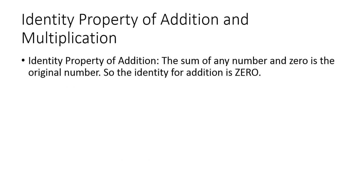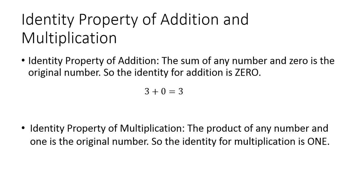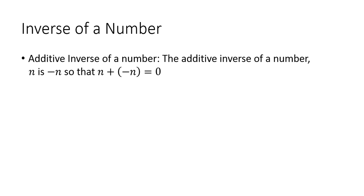Next we have the identity properties of addition and multiplication. The identity property of addition says the sum of any number and zero is the original number — the identity for addition is zero. So three plus zero equals three, five plus zero equals five, negative six plus zero equals negative six. The identity property of multiplication says the product of any number and one is the original number. Three times one is three, five times one is five, negative six times one is negative six — multiplying by one doesn't change it.